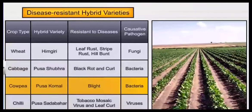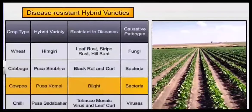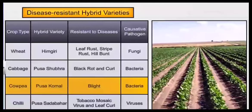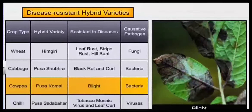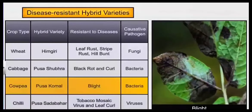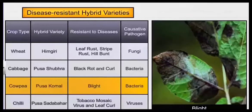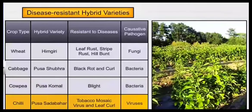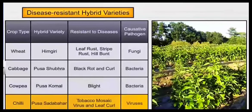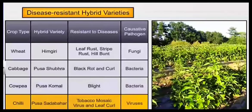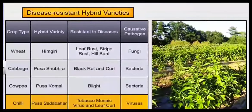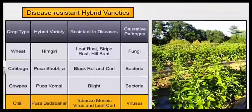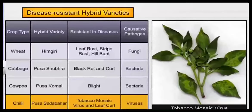The next one is Pusa Komal, which is a variety of cowpea resistant to bacterial blight disease. And the last one is Pusa Sada Bahar, which is a variety of chili resistant to viral diseases like tobacco mosaic virus and leaf curl disease.